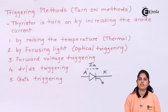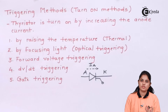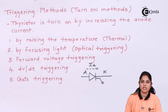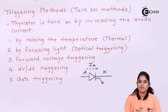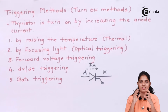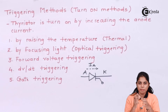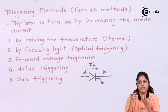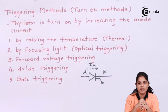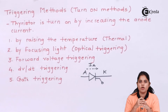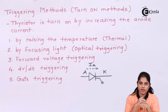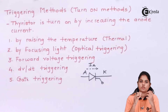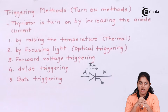Optical triggering can be used as a triggering method to turn on the SCR. However, both thermal and optical triggering are not desirable methods, because if the SCR turns on accidentally, it can be dangerous for that particular circuit or device. So these two methods are always to be avoided.